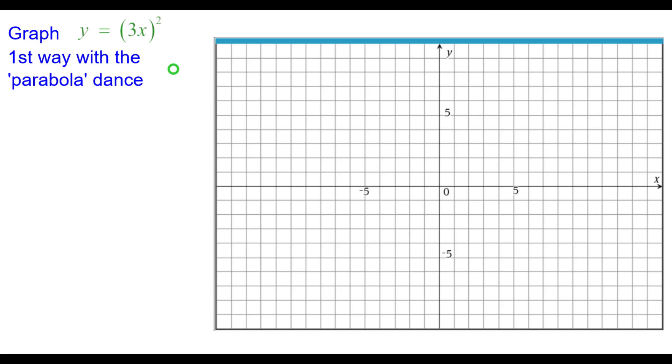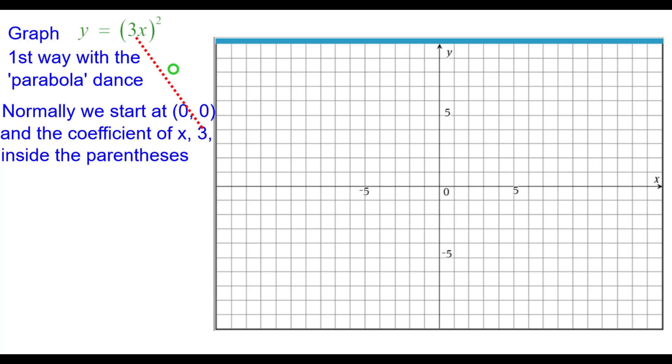The first way is with what we call the parabola dance. Normally we start at the origin and the coefficient of x, 3, inside the parentheses does not affect this point. As you can see when x equals 0, y is equal to 0 also.